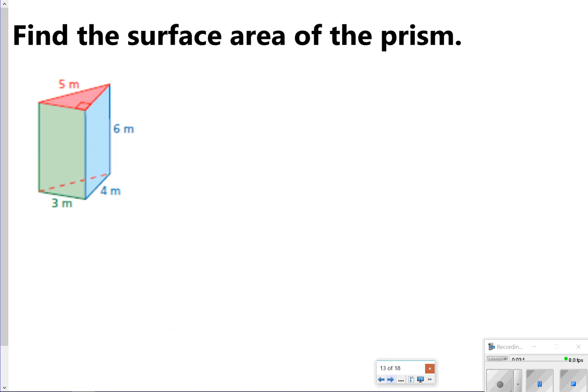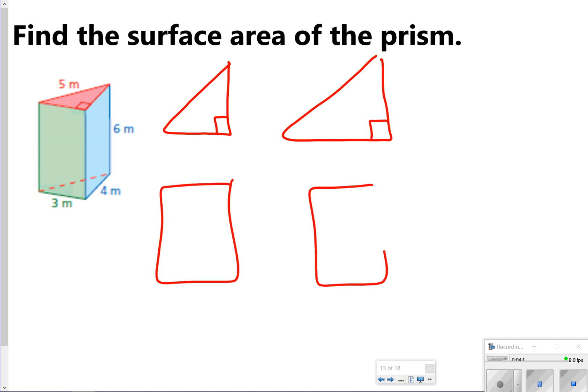All right, so I'm going to show you how we are going to find the surface area of triangular prisms. One thing I like to do first is just draw the shape. So I have 2 triangles, those are my bases, and then I have 3 rectangles. Then I just have to look for the numbers that go with each. Notice I've got the triangle up here, and what I'm looking for are the numbers that are touching this right angle.